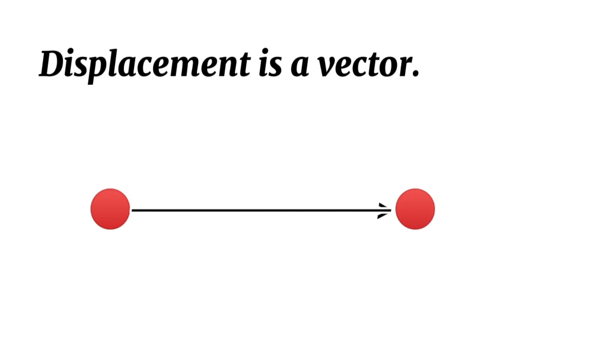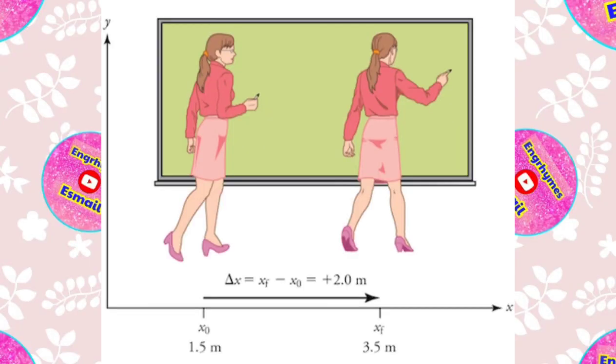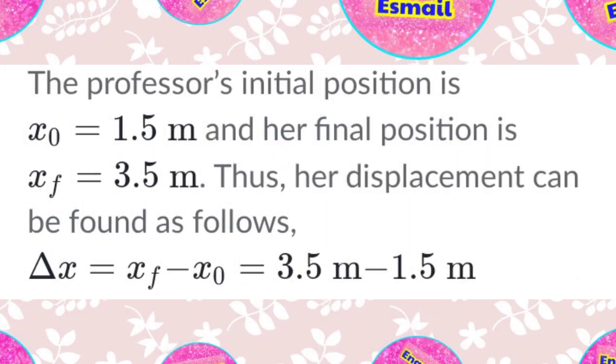For example, consider this image from OpenStax College Physics with a professor pacing left and right while doing her lecture. The professor's initial position is x sub 0 equals 1.5 meters, and her final position is x sub f equals 3.5 meters. Thus, her displacement can be found as follows: delta x equals x sub f minus x sub 0 equals 3.5 meters minus 1.5 meters, which equals positive 2 meters. In this coordinate system, motion to the right is positive while motion to the left is negative.